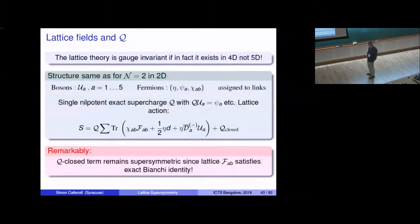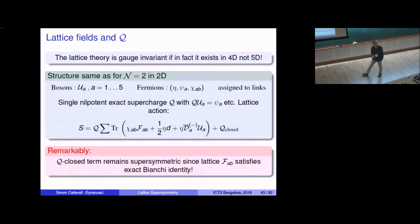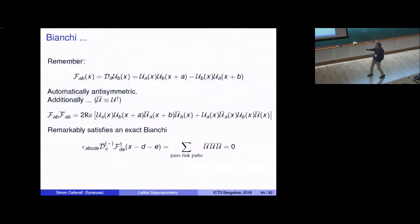The lattice theory is truly gauge invariant and supersymmetric only if it exists in four dimensions. Everything from 2D ports over: five complex gauge fields, 10 fermions packaged as before, all on links, with a single nilpotent supercharge Q. The discrete Q-closed term is also still supersymmetric on the lattice — and this depends on a remarkable fact: the lattice F satisfies an exact Bianchi identity. The prescription for F as a difference of link paths on the lattice is explicitly anti-symmetric, and computing epsilon D-bar F-bar yields a sum over link paths involving three U-bars that sum to zero in pairs due to the epsilon tensor. This exact Bianchi identity holds for this discretization prescription but not for the typical F used in lattice QCD.